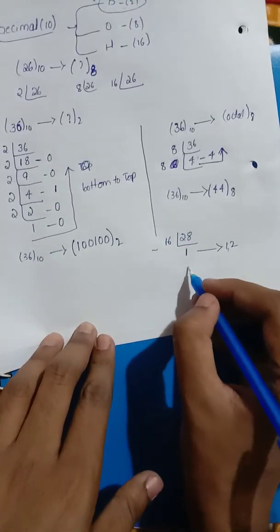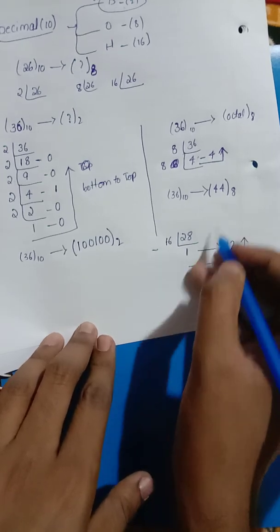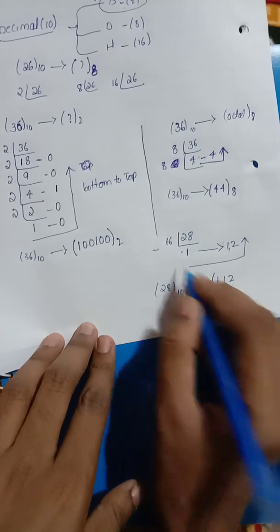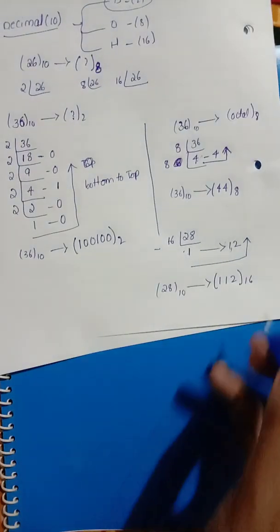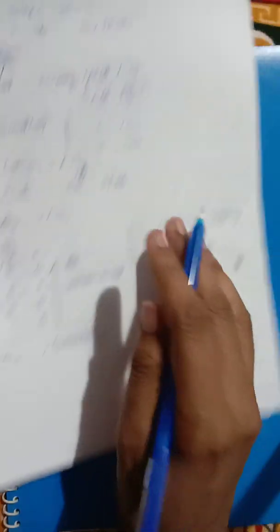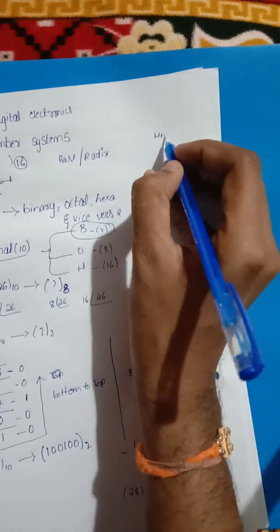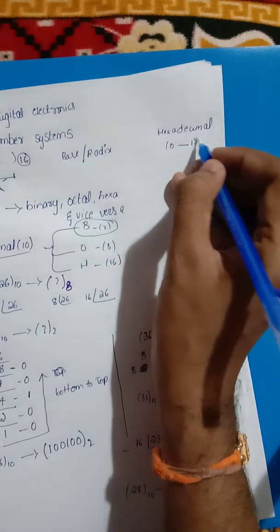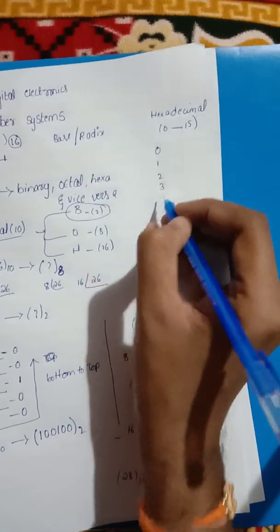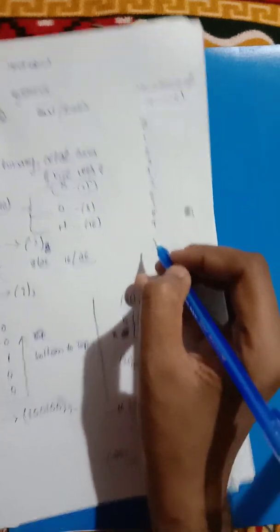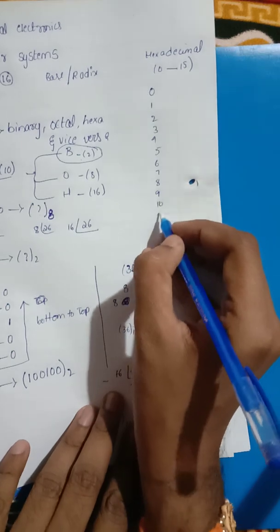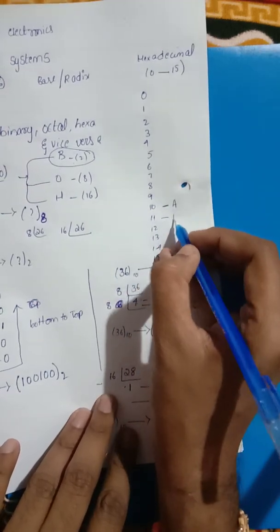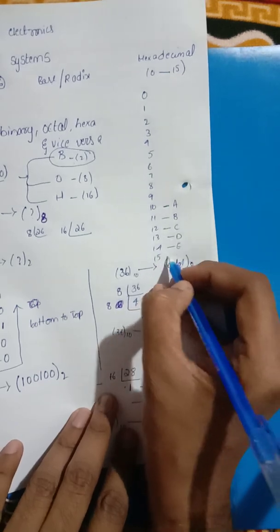In hexadecimal, you have values from 0 to 15. The digits are: 0, 1, 2, 3, 4, 5, 6, 7, 8, 9 — and then letters are used: A is 10, B is 11, C is 12, D is 13, E is 14, and F is 15. So when a remainder is 12, in hexadecimal it is written as C.